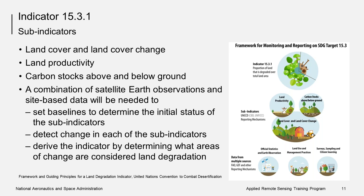Areas with declining productivity and carbon stocks may be considered degraded, while areas with increasing productivity and carbon stocks may be considered improving. Data to measure these sub-indicators can come from several sources, but satellite earth observations can be used to set baselines, determine the initial status of these sub-indicators, detect change, and determine which areas of change are considered land degradation. The measurement unit for Indicator 15.3.1 is the spatial extent in hectares or kilometers square expressed as the proportion of land that is degraded over the total land area.